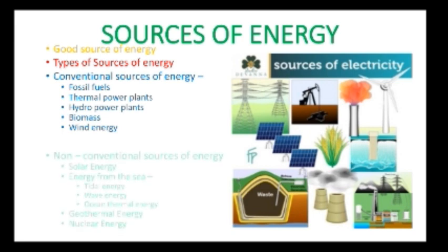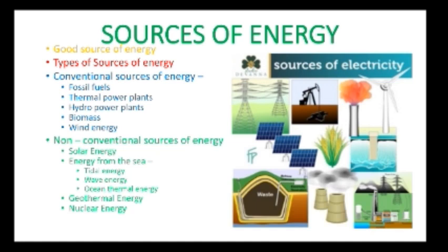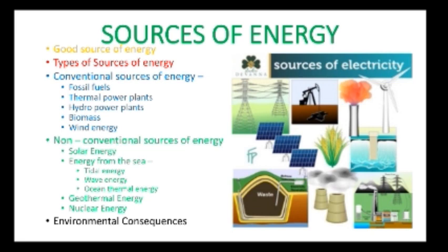The second part of types of sources of energy is non-conventional sources of energy. We will cover the definition along with solar energy and energy from the sea, which can be categorized into three parts: tidal energy, wave energy, and ocean thermal energy — as well as geothermal energy and nuclear energy, which you may also call modern types of energy. The last thing is environmental consequence — how energy is related to our environment, whether it is harmful or good for our society, and whether the sources of energy are eco-friendly or not.